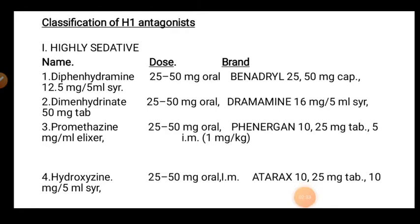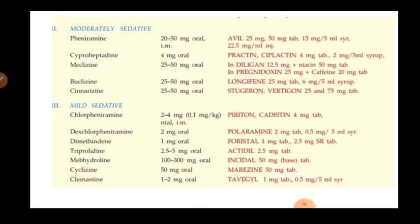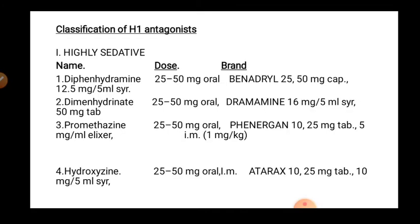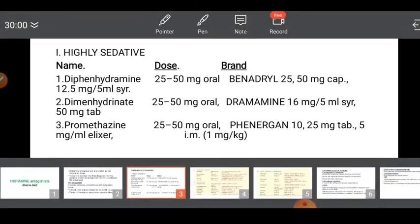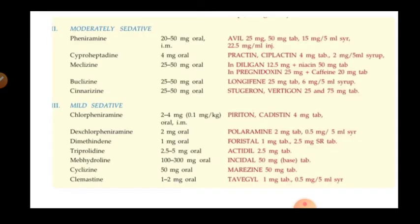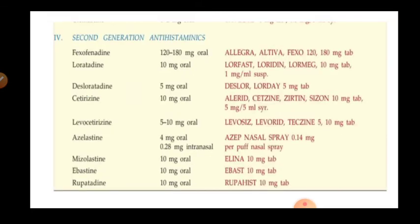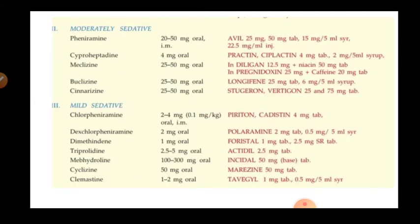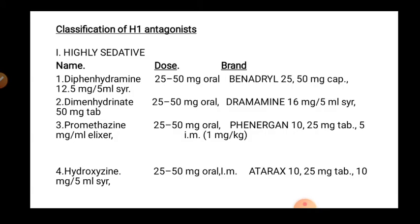These drugs fall into three categories: highly sedative, moderately sedative, and mild sedative. These are the drugs concerned under the first generation. There are also some second generation drugs available, which are an upgraded form compared to first generation drugs. The term sedative simply means drowsiness and sleepiness.